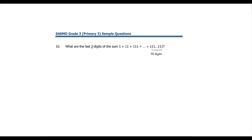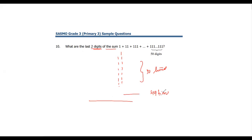Question number 10: what are the last two digits of the sum of this particular series? It looks complicated but is very simple. The series goes on for 50 digits, meaning you're adding 1 fifty times in the units place, giving 50 — carry forward 5. In the tens place you're adding 1 forty-nine times, giving 49 plus the carried 5 equals 54, and again carry 5. So the last two digits of the sum are 4 and 0.